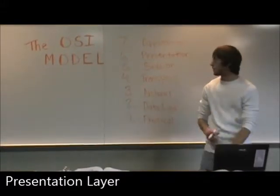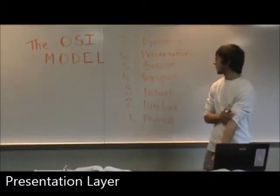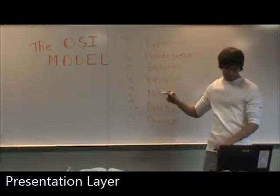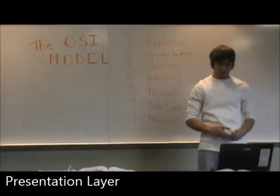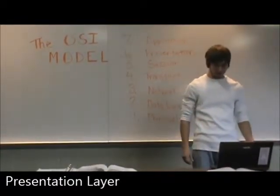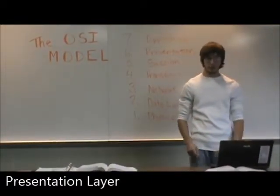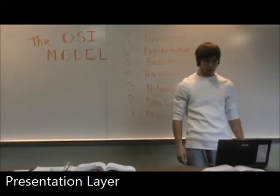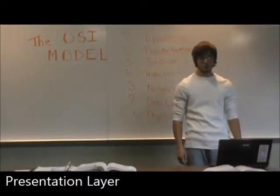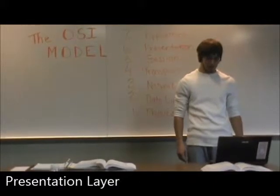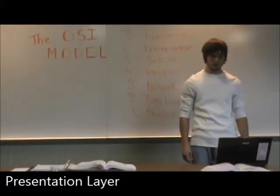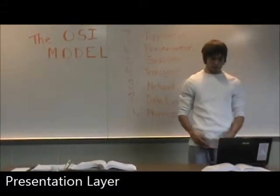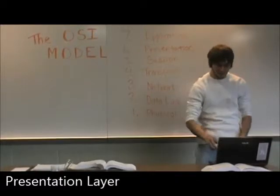The next layer of the OSI Model is layer six, the presentation layer. This layer handles data formatting and translation. It also handles protocol conversion, data encryption and decryption, data compression, and graphics commands. The PDU at this layer is simply referred to as data.